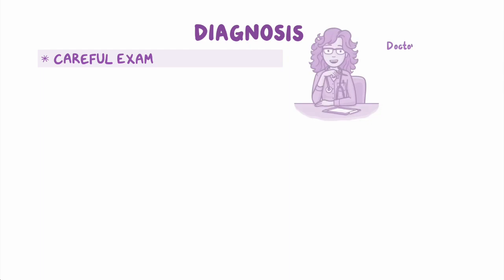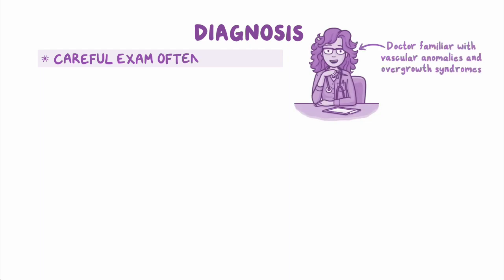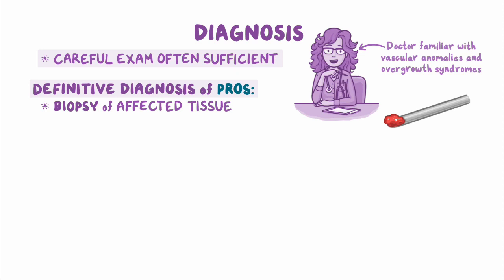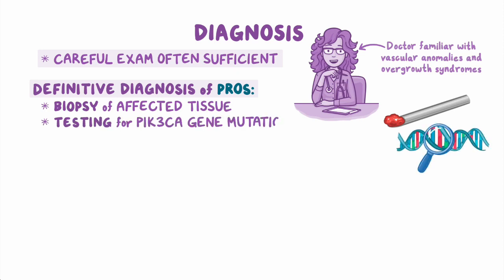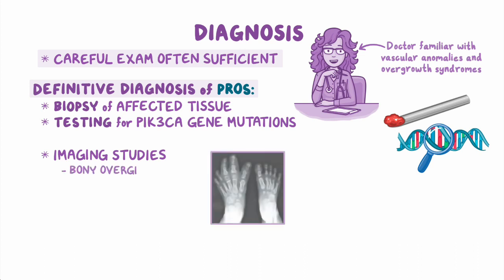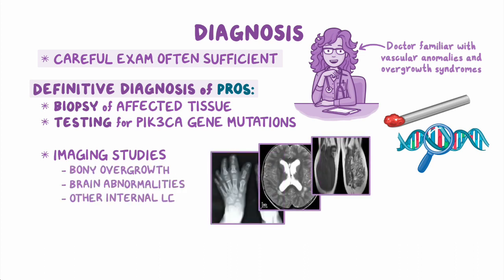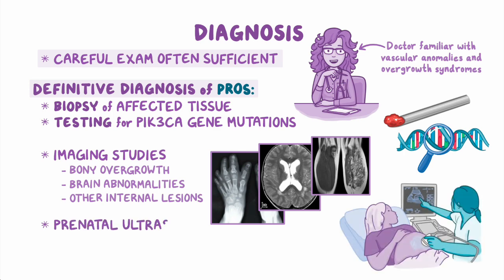Careful exam by a doctor familiar with vascular anomalies and overgrowth syndromes is often sufficient to make a clinical diagnosis. However, the definitive diagnosis of PROS involves a biopsy of affected tissue to identify a PIK3CA mutation. Imaging studies may be performed to detect bony overgrowth, brain abnormalities, or other internal lesions. Prenatal ultrasound sometimes detects growth abnormalities associated with these conditions.